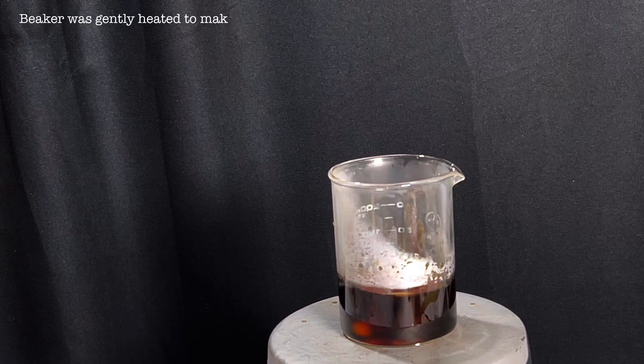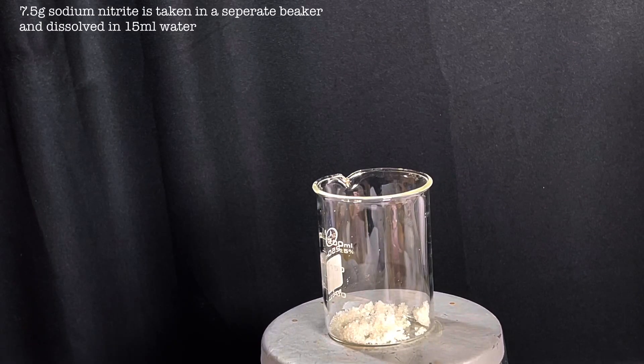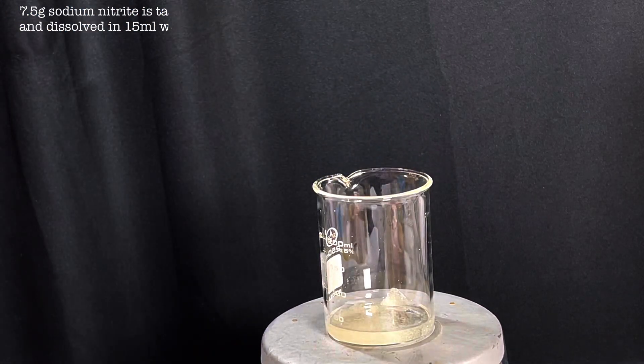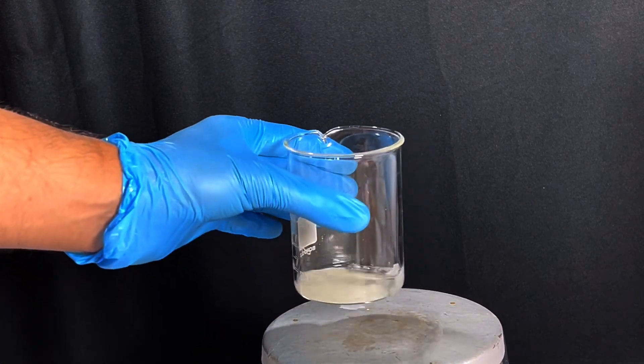Now keep the beaker aside. In a separate 250 milliliter beaker, 7.5 grams of sodium nitrite was taken and dissolved in 15 milliliters of water.